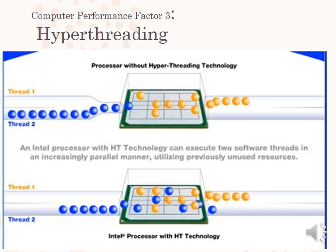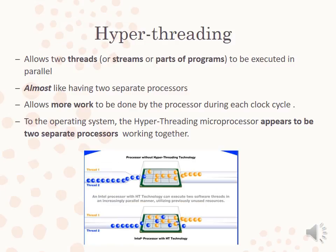Hyperthreading is a technology that some CPUs have, where more than one thread — more than one part of a software — can be handled at the same time. Hyperthreading means that two threads are executed in parallel. It's almost like you have two processors, but it is not the same as multi-core processing. It does allow more work to be done by the processor during each clock cycle, especially when multi-threaded applications are being processed. To the operating system, a hyperthreading microprocessor looks like two separate processors working together.